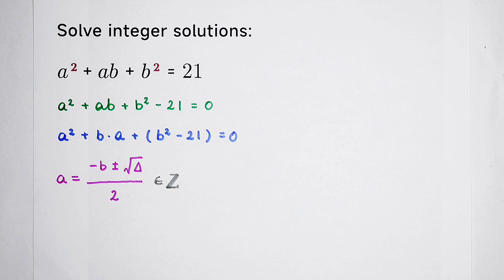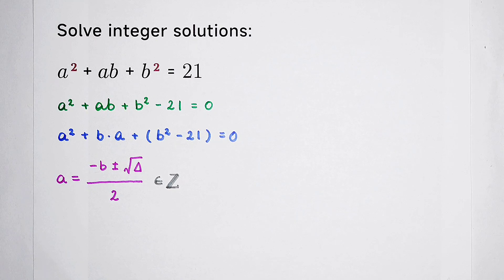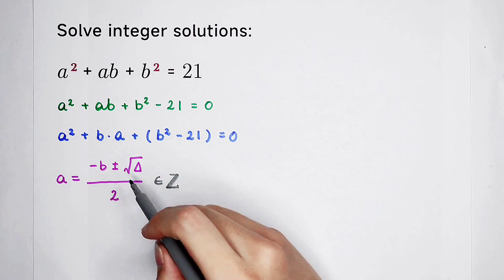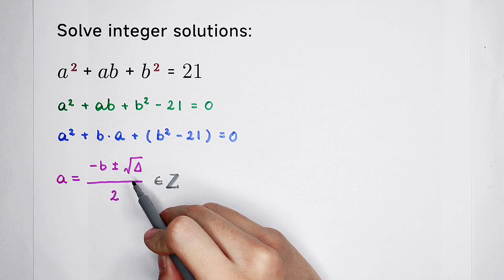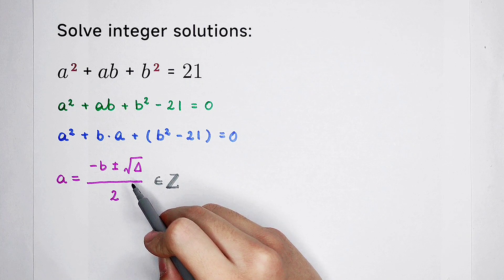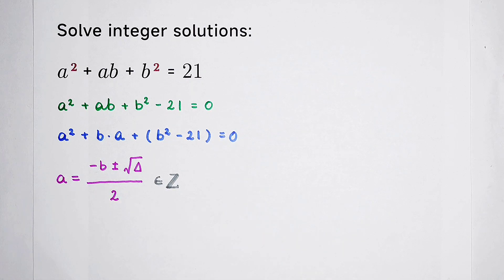Now, what should we do? a is an integer. So, we can say that square root of delta must be an integer. It has to be an integer. If square root of delta is an integer, then delta should be a square number.